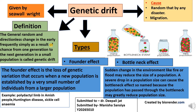The surviving population rarely represents the actual genetic makeup of the initial population. This leaves smaller variation among the surviving individuals, so genetic diversity decreases in the surviving population. Population bottlenecks increase inbreeding due to the reduced pool of possible mates. A sudden change in the environment such as fire or flood may drastically reduce the size of a population, causing the bottleneck effect — so named because the population has passed through a bottleneck that greatly reduced its size.